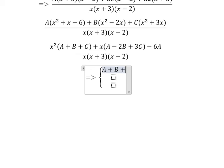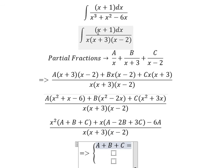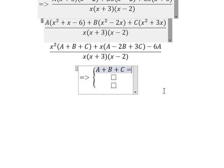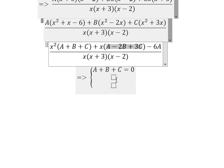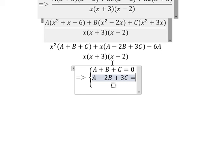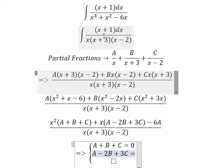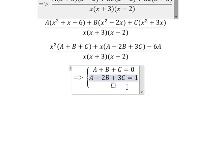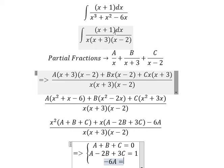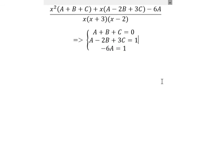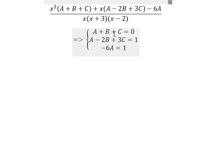We have A plus B plus C. Here we don't have x², so we get zero. The coefficient of x is 1. For the constant term, negative 6A equals 1. Now we get the values for A, B, and C.